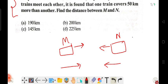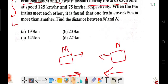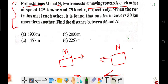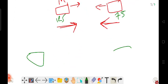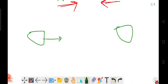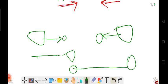The speed of the first train is 125 km/hr and the second is 75 km/hr. When the two trains meet each other, it is found that one train covers 50 km more than the other. Suppose one train covers a certain distance, the other train covers 50 km less.